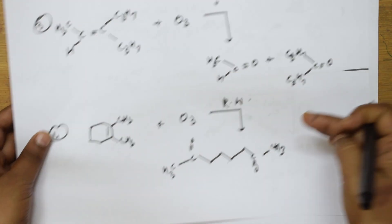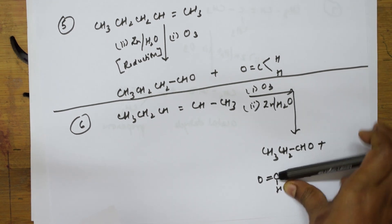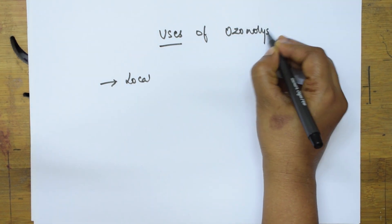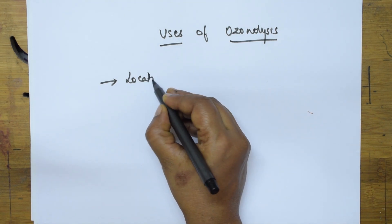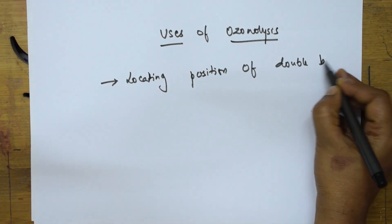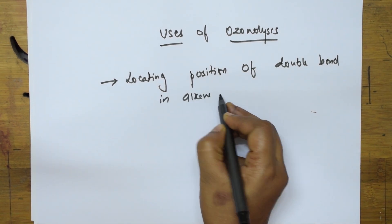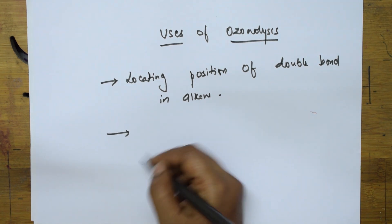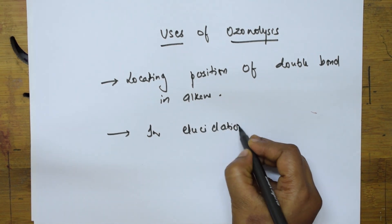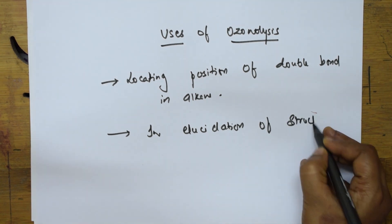I have done 7 examples of ozonolysis. Last but not the least, let us write the uses of ozonolysis. Ozonolysis helps us in locating the position of the double bond in alkene. It can also be used in elucidation of the structure of alkene.